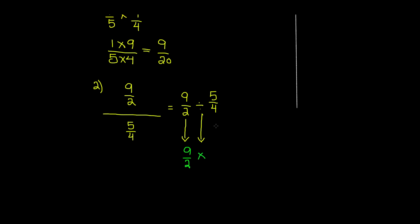The final step is to flip the second fraction, so it's going to turn into four over five. Now we simply multiply: nine times four over two times five. Nine times four is thirty-six, and two times five is ten.